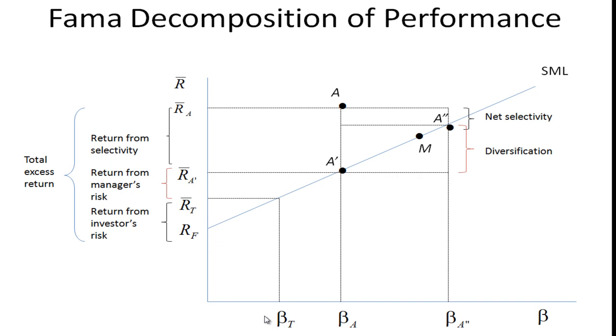The portfolio manager actually says, I'm not going to use this level of risk, I'm going to use this level of risk. So the difference between the return at A prime, R bar A prime, and R T is a return from the manager's risk. Let's think about this total excess return, the return you're earning over the risk-free rate, which has these different components.